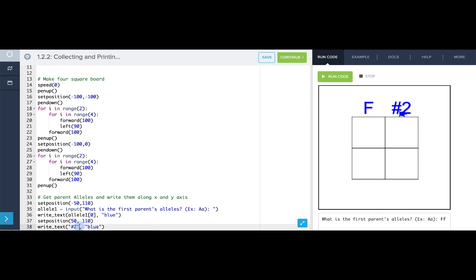In place of number two, I want to call allele one and get the value found at the first index. Let's see how that looks. Perfect.